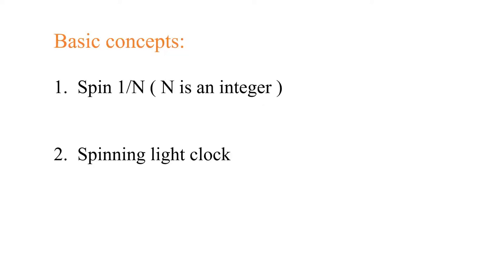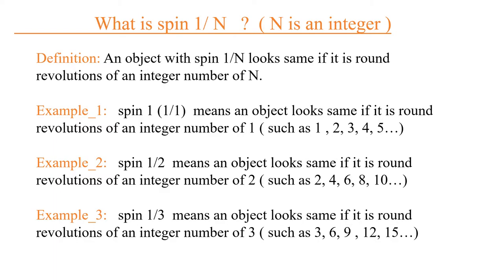Here we introduce two basic concepts. One is spin 1 over n, and the other is spinning light clock. What is spin 1 over n? The answer is that an object with spin 1 over n looks the same if it is rotated an integer number of n revolutions. Here we have three examples. Example 1: spin 1 means the object looks the same if it is rotated an integer number of 1 revolution — 1, 2, 3, 4, 5, 6, and so on.